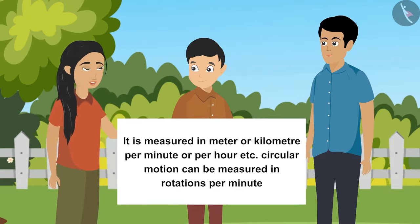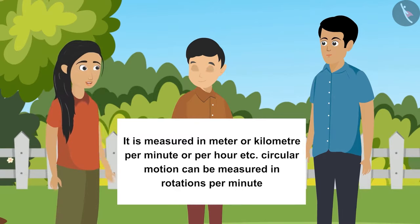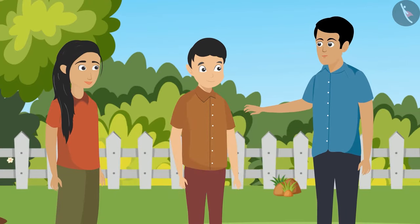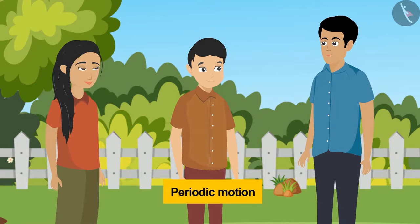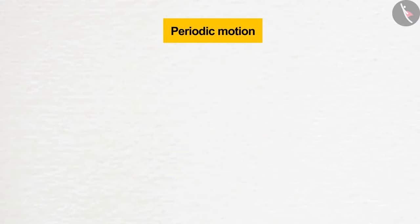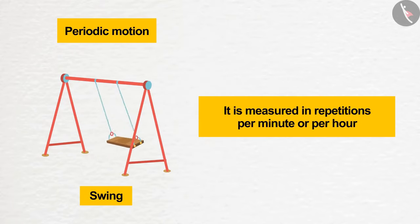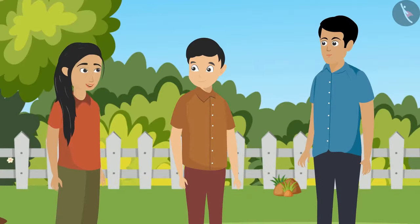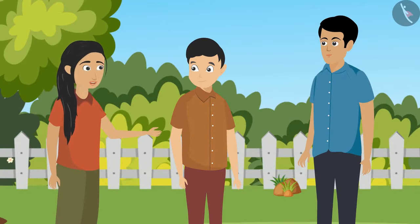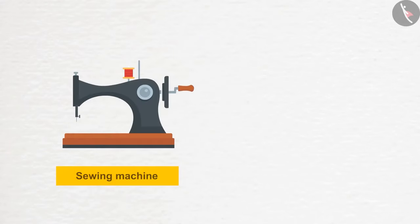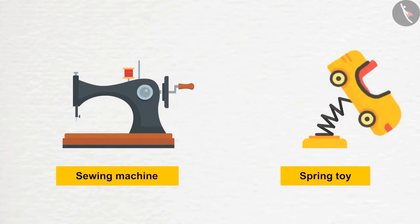Pavan, just like we measure straight motion in meters or kilometers per minute or per hour, circular motion can be measured in rotations per minute. Other than circular motion, another type of motion is periodic motion. For example, a swing periodically moves back and forth. We can measure it in repetitions per minute or per hour. Other examples of periodic motion are a sewing machine and a spring toy, which also repeats its motion.